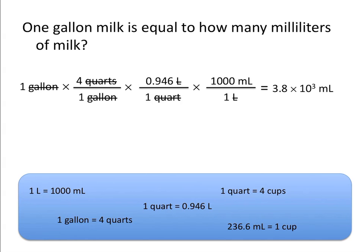Looking at the conversion factors given, you might have noticed that different conversion factors could have been used to solve this problem — and you are exactly right. Dimensional analysis is a process used to convert something from one set of units to another, but there's no one correct path. As long as you use appropriate conversion factors, there are often many paths you could take to arrive at the correct answer.